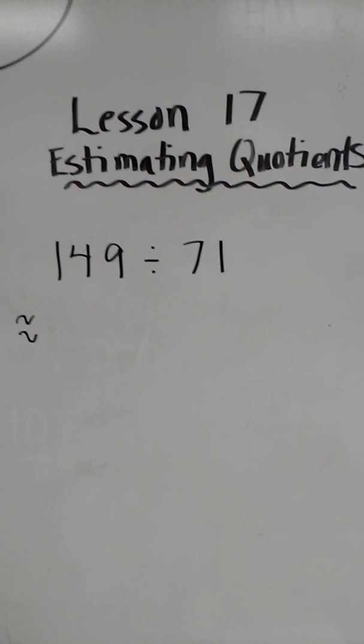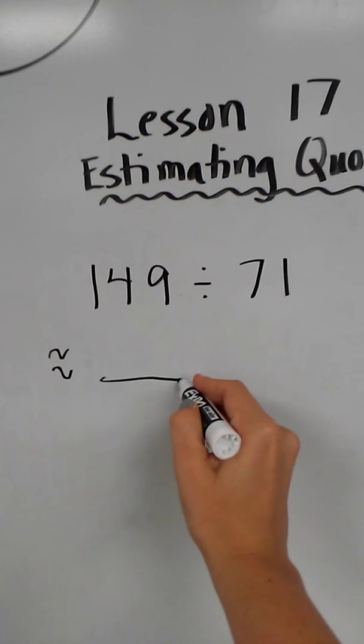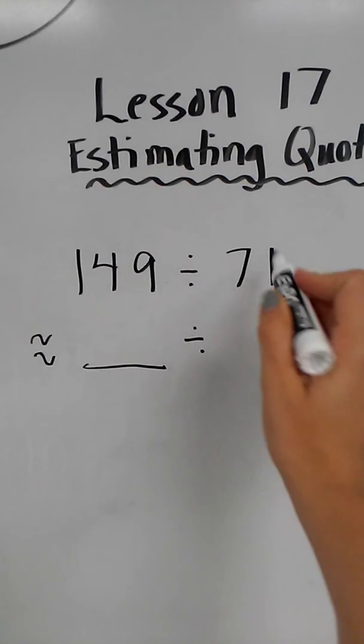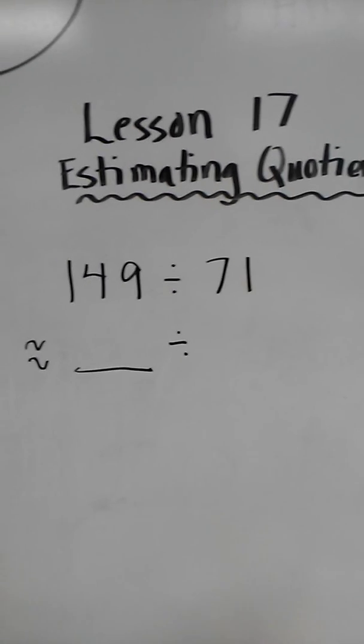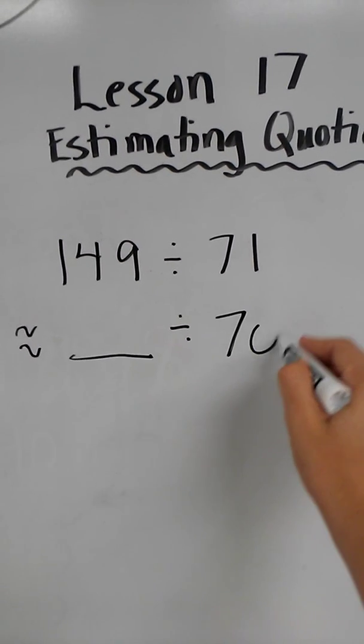So the first thing we do when we estimate quotients is we round our divisor. So we're going to leave this blank for now, and we're going to round our divisor, in this case to the nearest ten, because it's a two-digit divisor. So 71 rounds to 70.